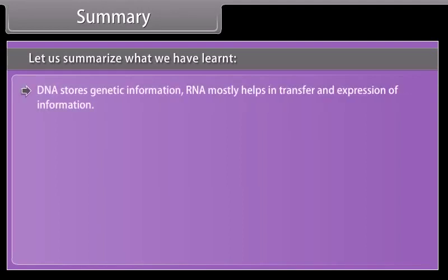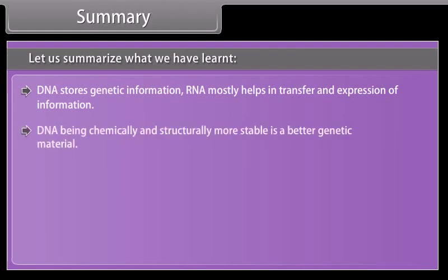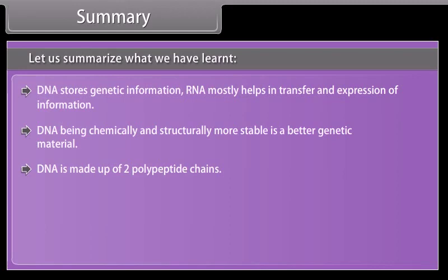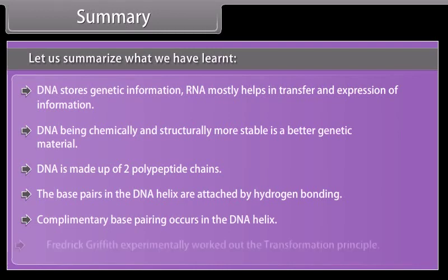DNA stores genetic information. RNA mostly helps in transfer and expression of information. DNA, being chemically and structurally more stable, is a better genetic material. DNA is made up of two polynucleotide chains. The base pairs in the DNA helix are attached by hydrogen bonding. Complementary base pairing occurs in the DNA helix. Frederick Griffith experimentally worked out the transformation principle.